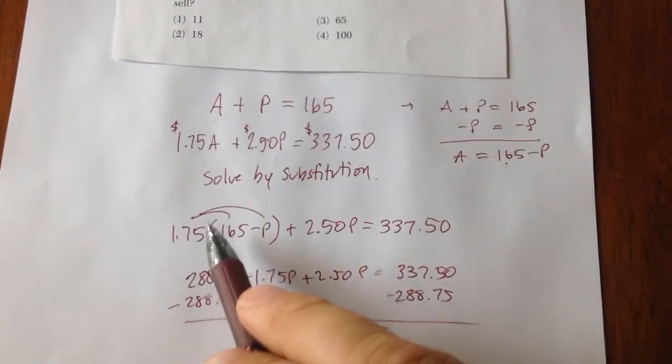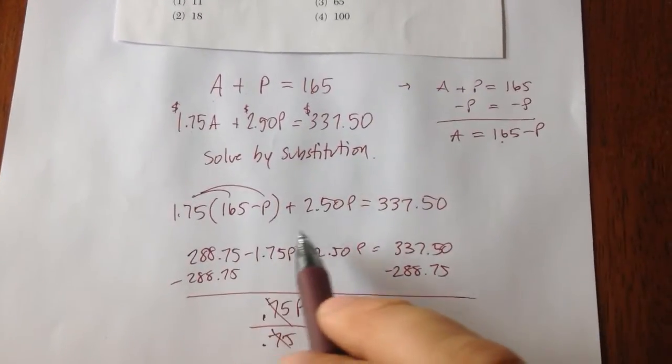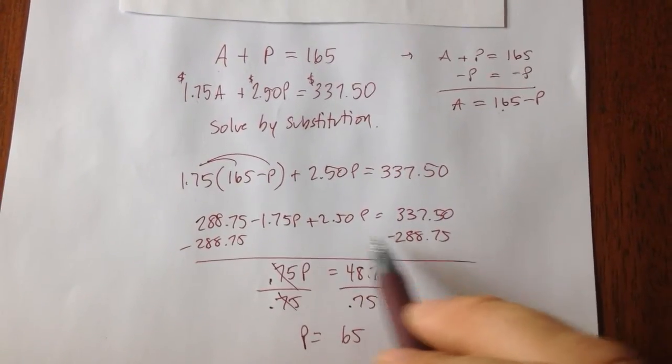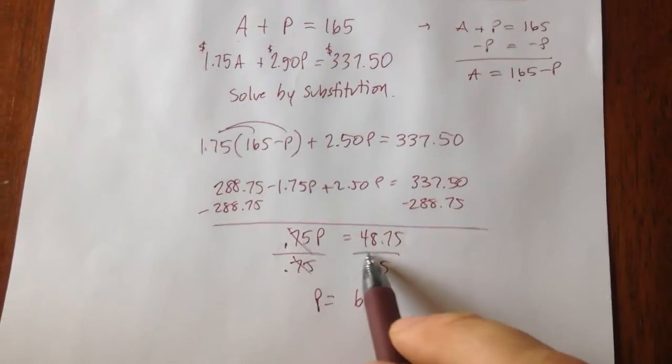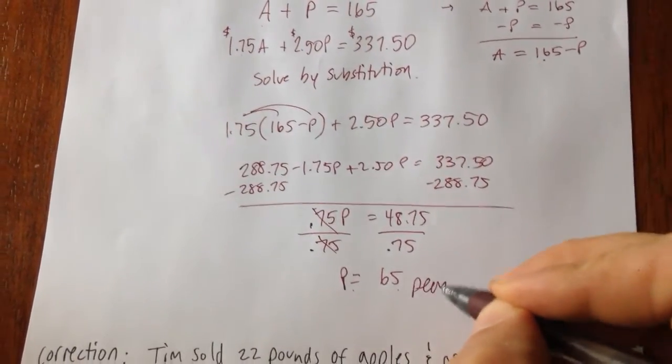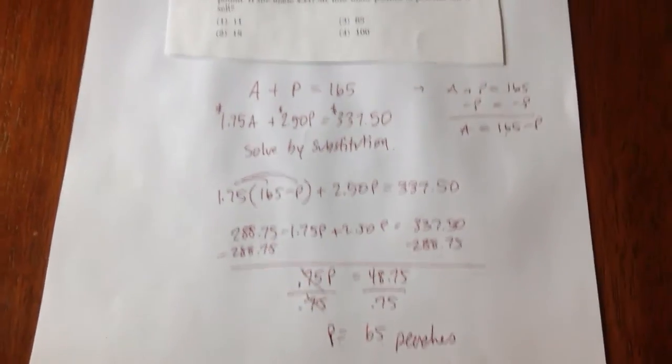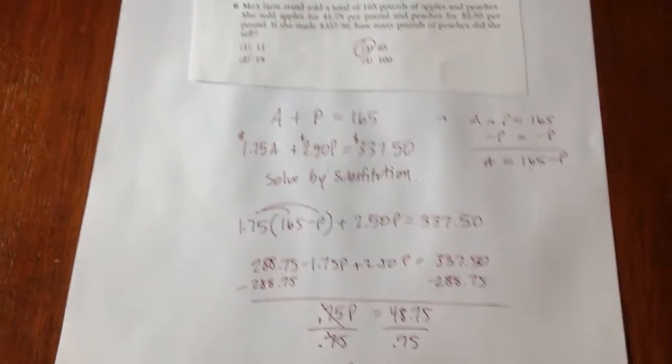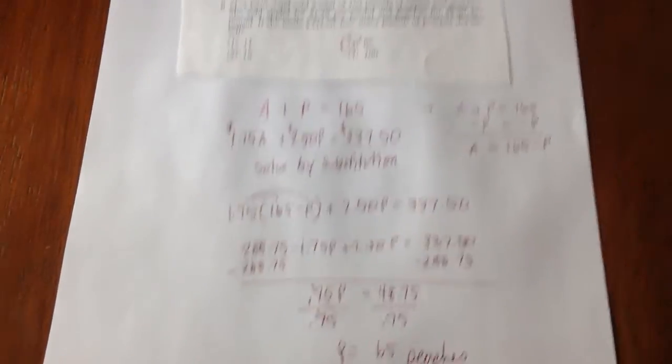So I then distribute my 175, I get this equation. I subtract to the other side, I combine these like terms, I solve my equation. I get p equals 65. There are 65 pounds of peaches. Choice number three.